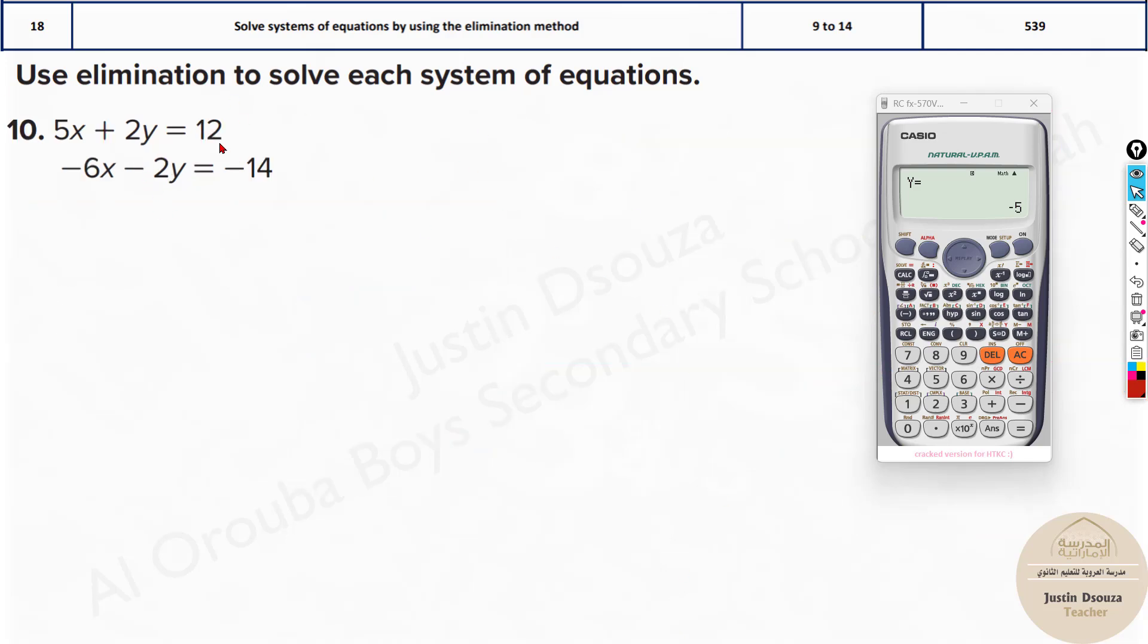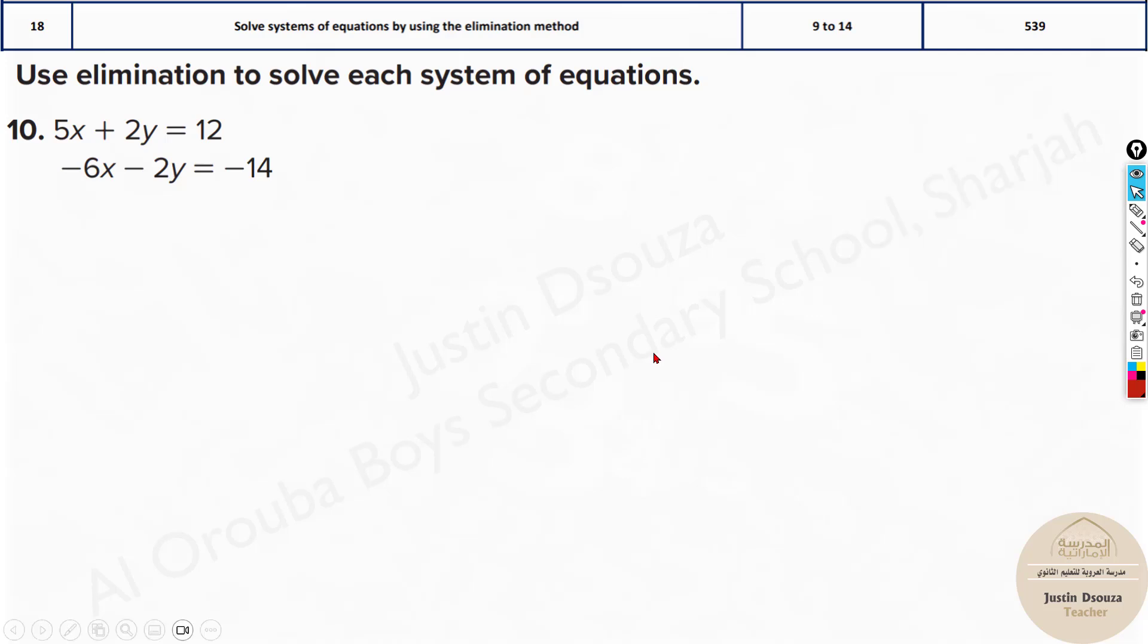You can check this answer as well and solve it up. I will just do it again. The calculator method is mode and 1. Remember this is just to check your answers. It is 5, 2, 12, minus 6, minus 2 and negative 14. The answers must be 2 and 1. Now how do you solve this? I will do this over here. It is very easy to solve this one. Why? Because you have plus 2, minus 2. This cancels off when you add these two equations.